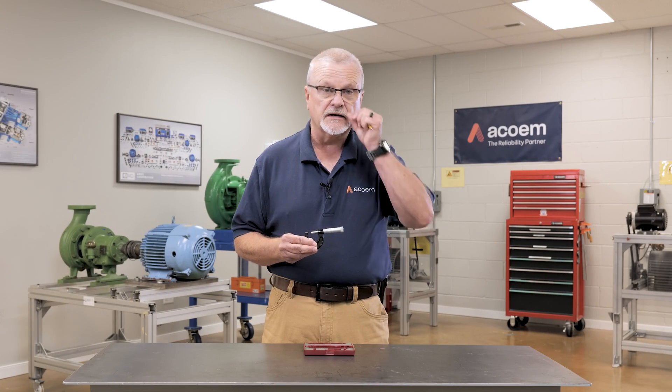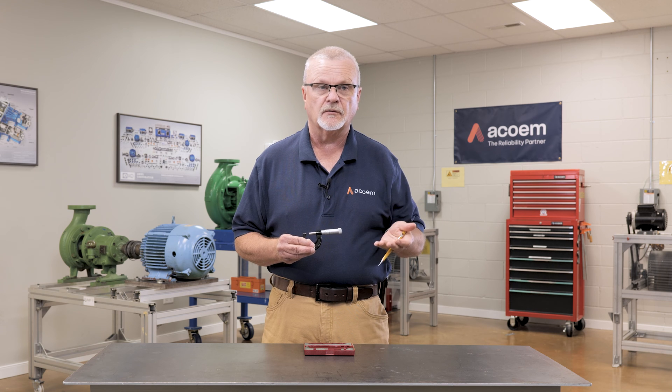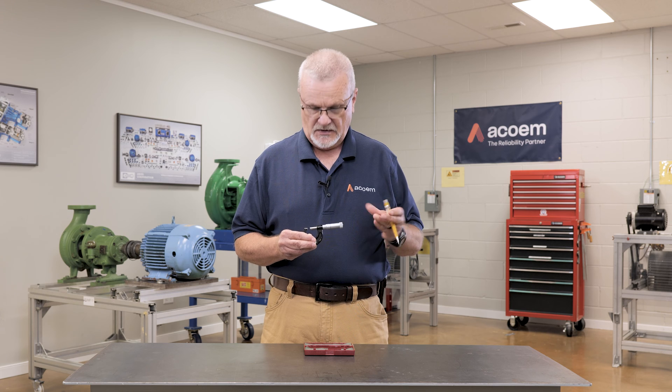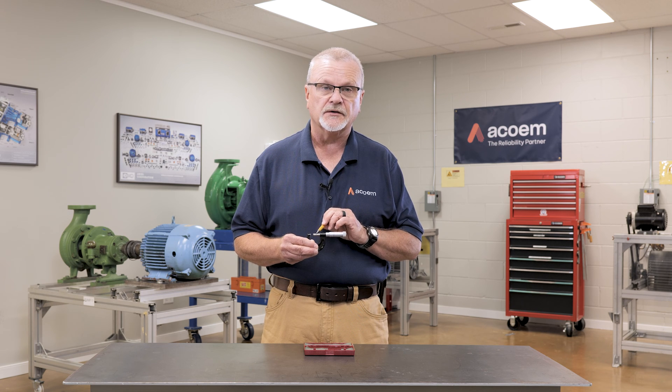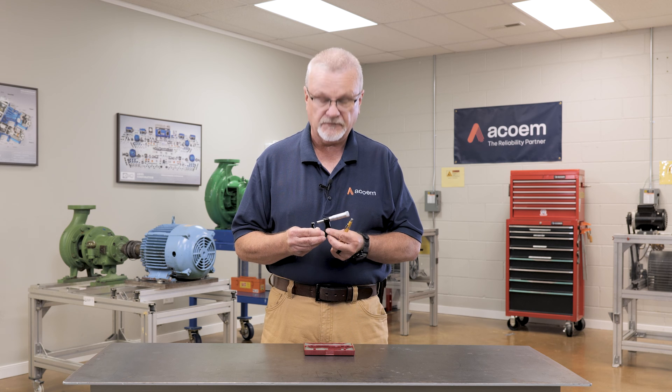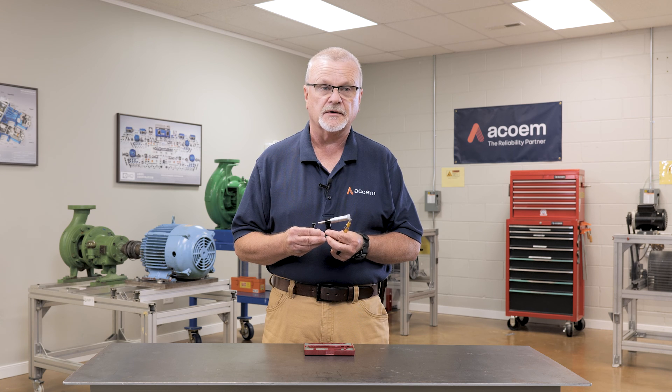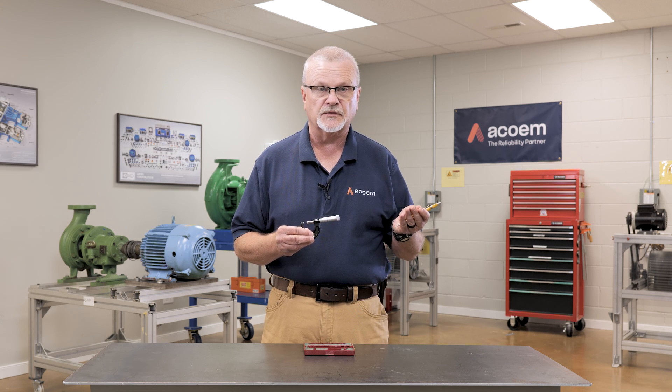Micrometers are graduated in one inch. So you can have a zero to one, one to two, two to three, three to four, and so on. Some actually have replaceable spindles where you can use one frame or one body of the micrometer and measure from zero up to 12 inches.